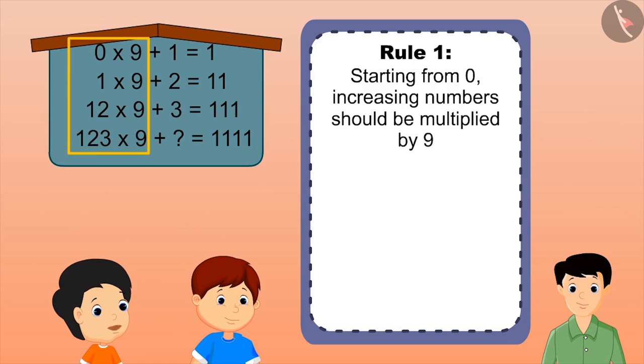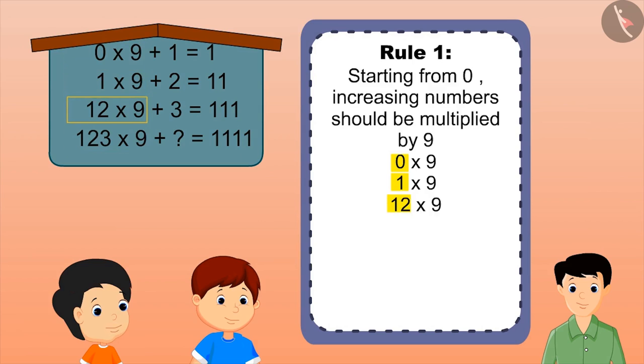Number 9 is multiplied each time on the left side, first multiplied by 0, then by 1, then by a two-digit number, that is 12. So, by following this rule, the next number will be a three-digit number, that is 123, which would be further multiplied by 9.